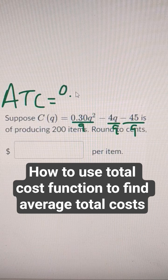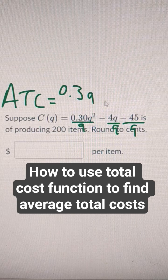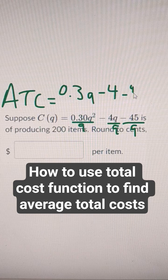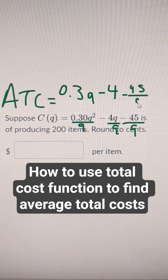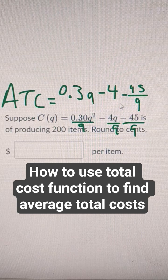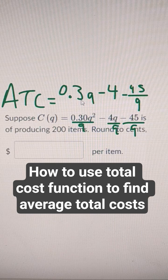So this would be 0.3Q minus 4, because those cancel out, minus 45 over Q. And then you can plug in 200 into each of these Qs, and that will give us the answer.